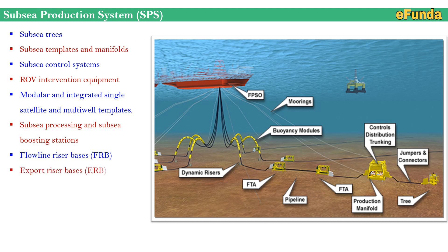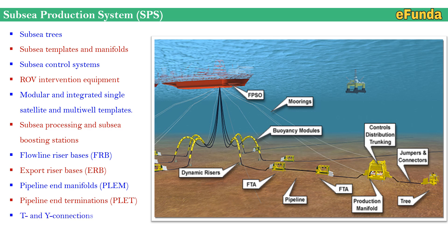Additional components include flow line riser bases (FRBs), export riser bases (ERB), pipeline end manifolds (PLEM), pipeline end terminations (PLET), T and Y connections, and subsea isolation valves (SSIV) — all components of the subsea production system.